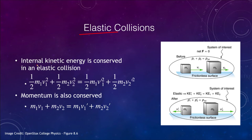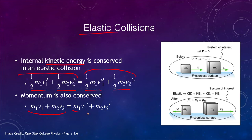In an elastic collision, the internal kinetic energy is conserved. The kinetic energy of the first object plus the kinetic energy of the second object before the collision must equal the kinetic energies of the objects after the collision. The momentum is also conserved: mass times velocity for each object before the collision equals mass times velocity after. The prime notation indicates velocity afterwards, while the unprime'd value is initial velocity.